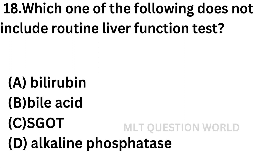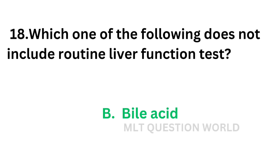Question number 18: Which one of the following does not include routine liver function test? Option A: Bilirubin. Option B: Bile acid. Option C: SGOT. Option D: Alkaline phosphatase. Bilirubin, SGOT/SGPT, ALP, total protein, albumin, globulin, and A/G ratio are included in routine liver function test, but bile acid is not. The correct answer is option B: Bile acid.